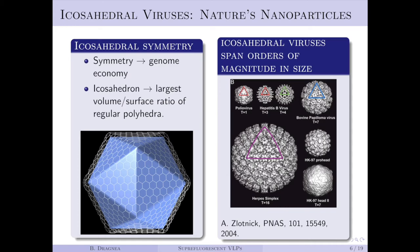Assembling many copies of the same protein into a protein cage leads to symmetry. This is economical since the genome has to encode for a single coat protein and thus can be kept small. The regular polyhedron with the highest volume-to-surface ratio is the icosahedron. About half of the known RNA viruses have an icosahedral capsid. Coat proteins are organized as pentamers or hexamers in such a capsid. A cage with icosahedral symmetry requires 12 pentamers at the vertices, but the facets can have a variable number of hexamers, which allows for variation in the shell size according to the genome length.